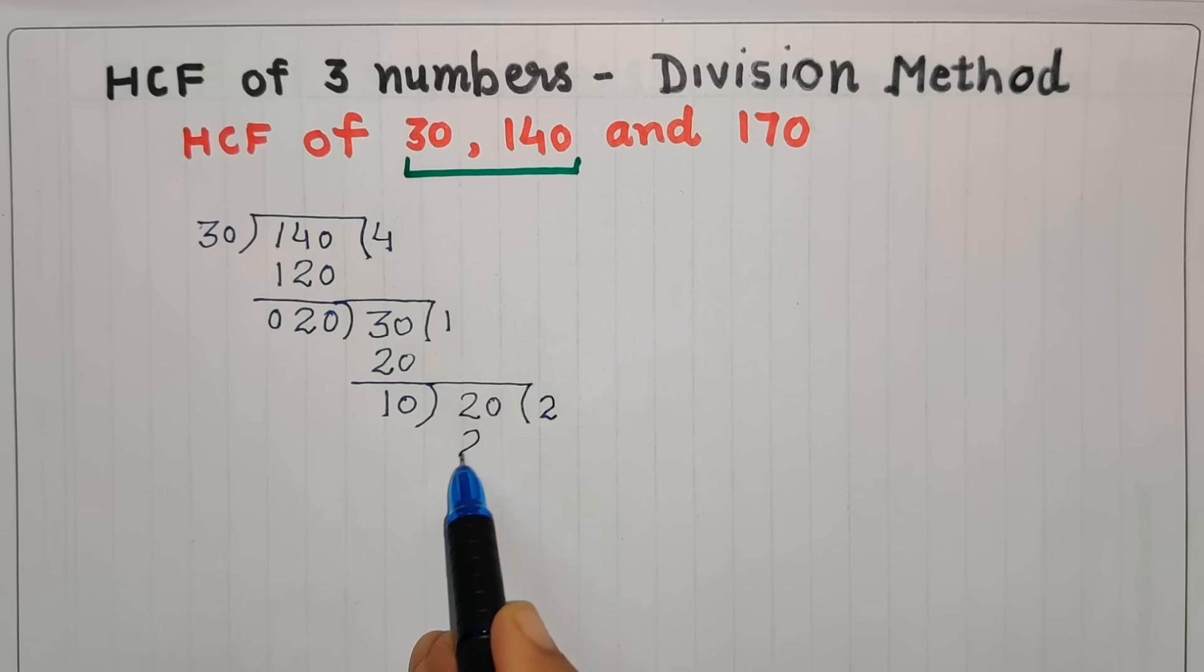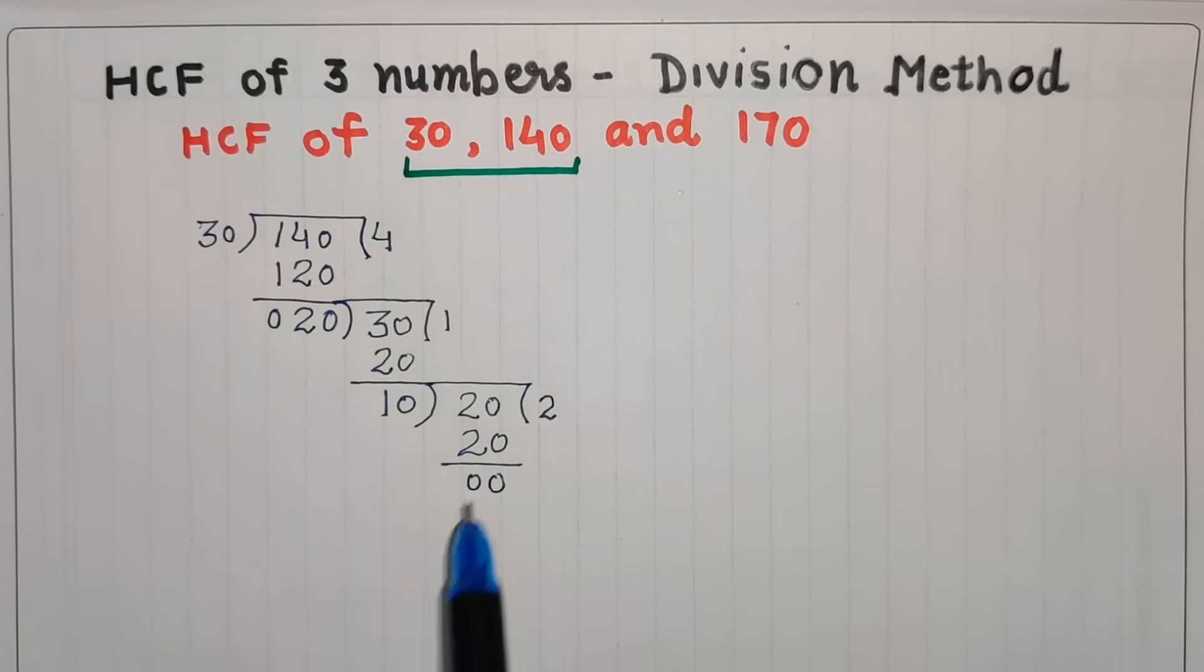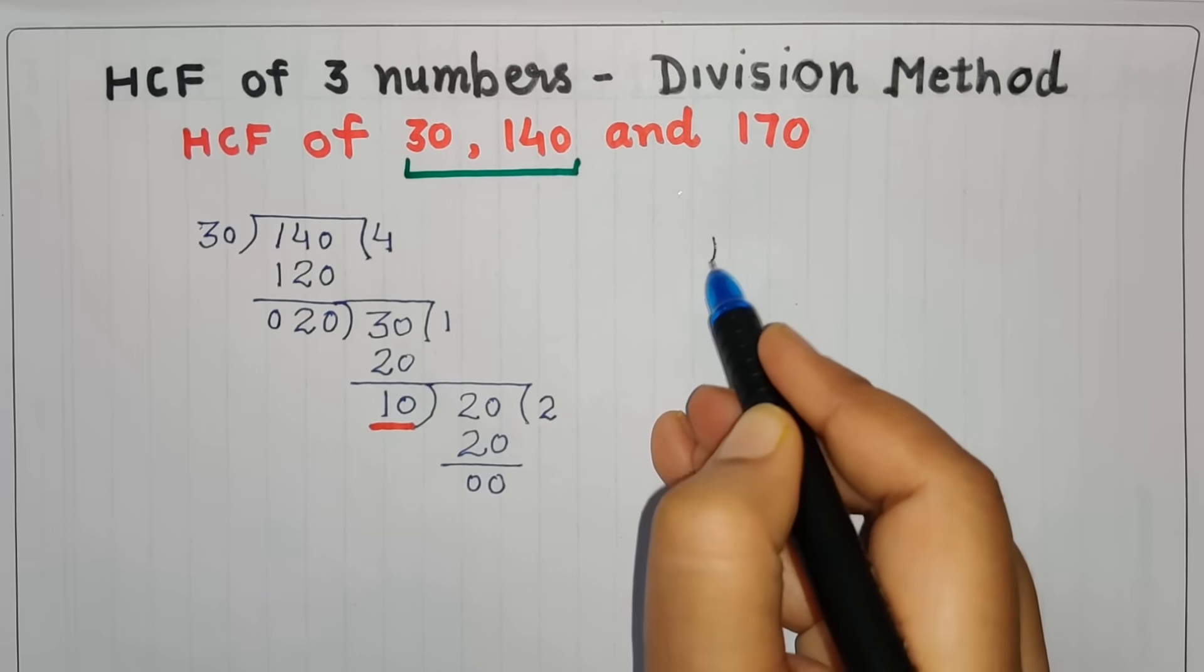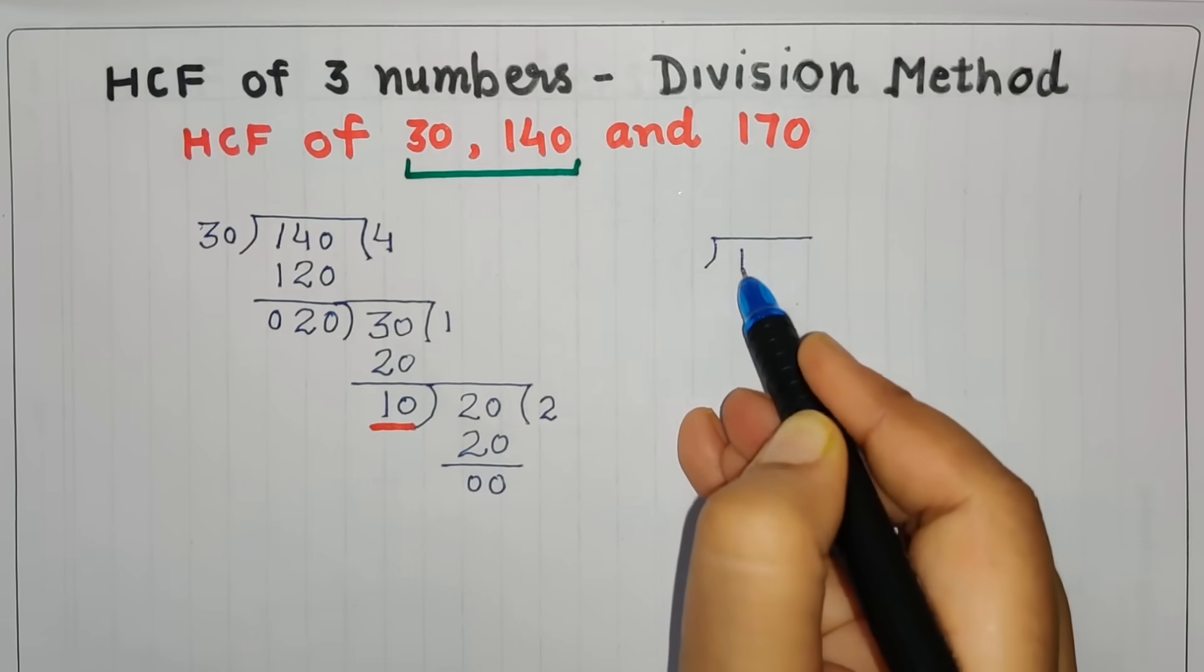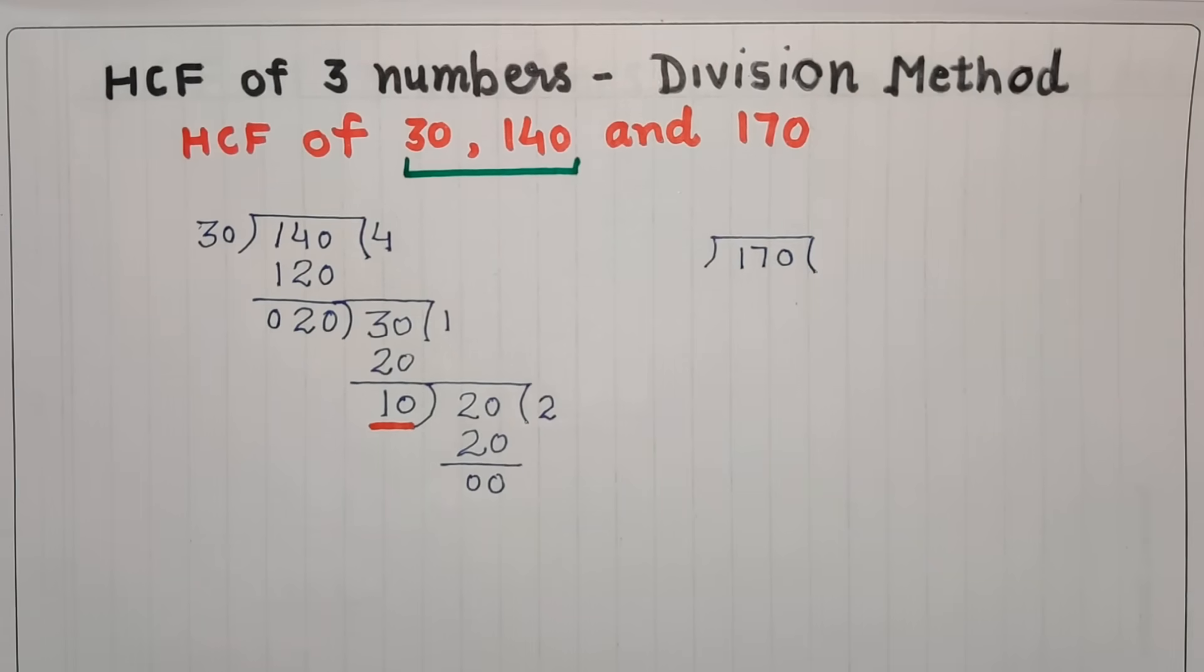This time the remainder has become zero, so we can say that HCF of 30 and 140 is 10. Now we will take our third number. Our third number is 170. We will divide 170 with the HCF of 30 and 140, which was 10.